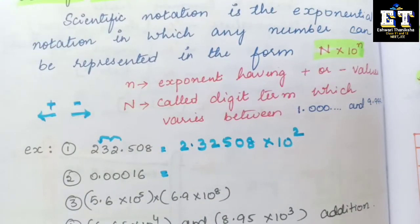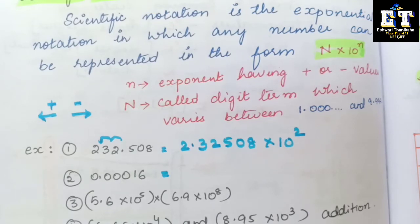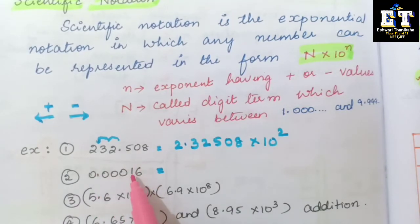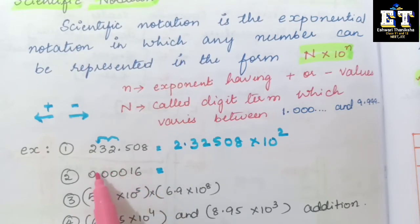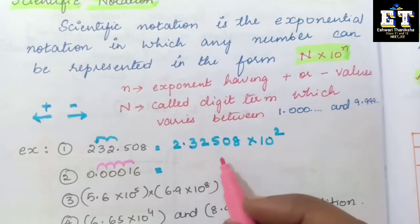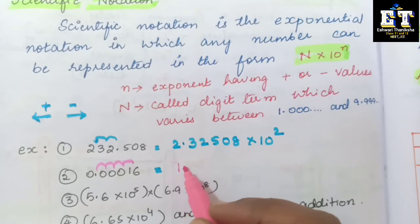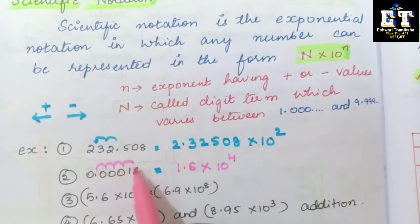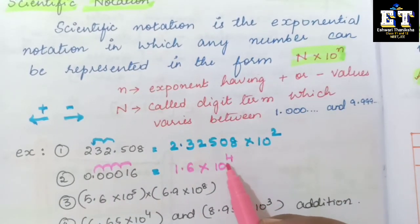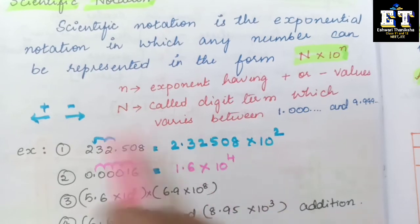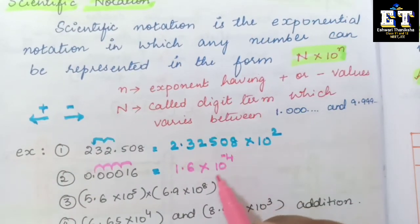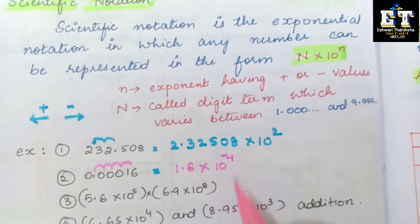The second number is 0.00016. As I said, the point should be after 1 non-zero digit, so it should come after 1. You need to move 4 digits to the right, giving 1.6 into 10 to the power of minus 4. Since you are moving to the right, the power will have a minus sign.